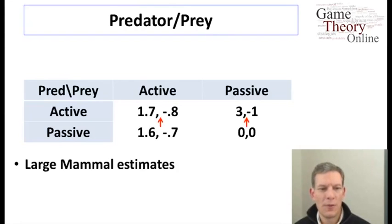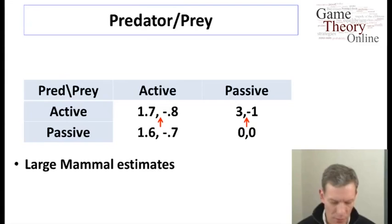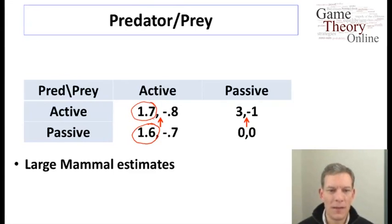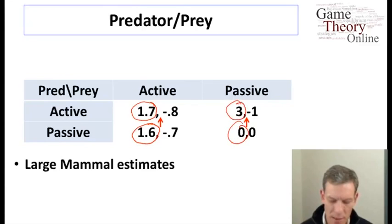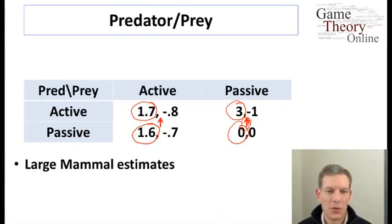Looking at the predator's payoffs in the large mammal game: if the predator is passive and the prey is active, the predator gets 1.6; if the predator is active and the prey is active, they get 1.7. So it's better to be active when the prey is active. If the prey is passive, the predator gets 0 from being passive and 3 from being active. So again it's better to be active. We end up with a prediction that the predator should be active regardless of what the prey does.